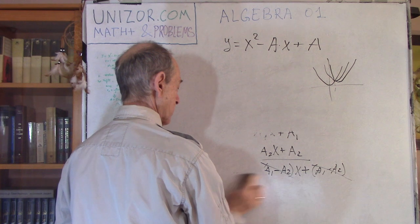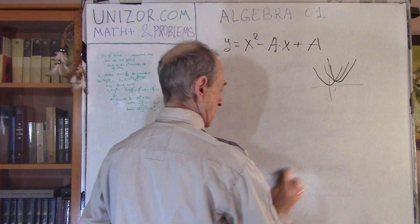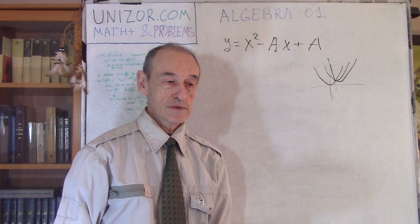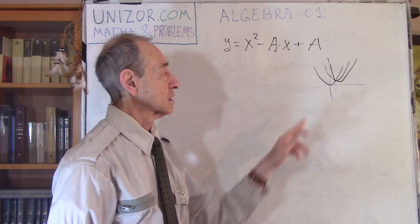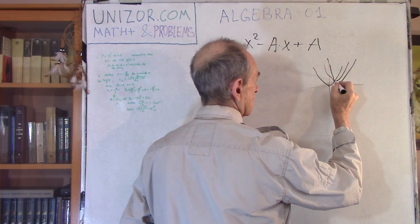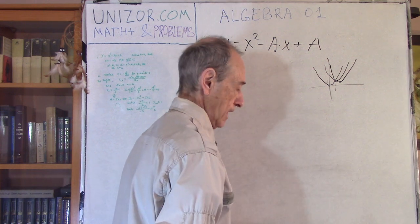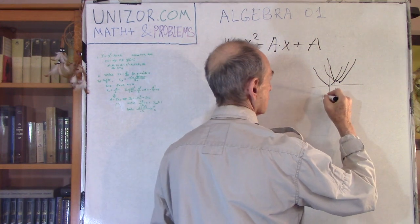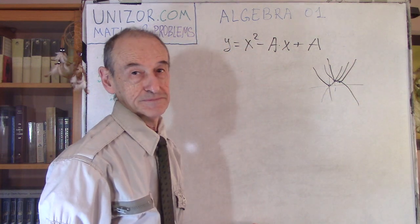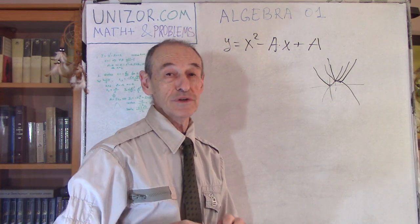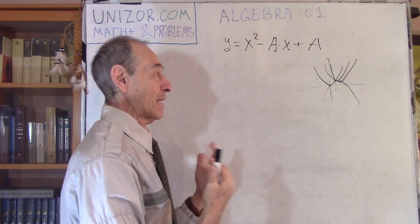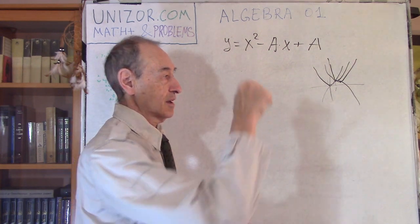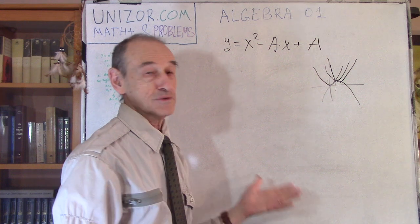A little bit more unusual result would be the result of the second problem. The second problem for the same family is as follows: consider the vertices of all these parabolas. Prove that all these vertices are actually lying on some parabola. This is a very non-trivial result which can be very simply obtained, but personally I would not expect that all the parabolas of this particular family would have their vertices forming another parabola.